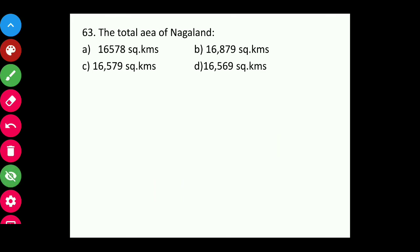Question sixty-three: The total area of Nagaland is 16,579 square kilometers. This is a very common and easy question.